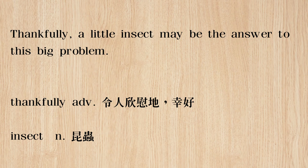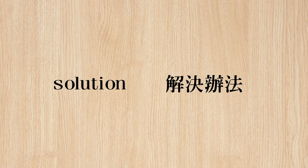Thankfully, a little insect may be the answer to this big problem. 好加在，一个小小的昆虫呢，may be the answer to this big problem. 问题的解决办法可以说 the answer to the problem 或 the solution to the problem，注意这个 preposition 是 to。Solution 的拼法是 S-O-L-U-T-I-O-N，指的是解决办法，不管是 answer 还是 solution，都会搭配 to 这个介系词。